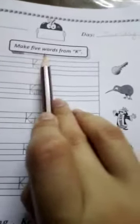Okay, now read the heading with me. The heading is Make 5 words from K. Now, come on the pictures. First of all, we will see the pictures.